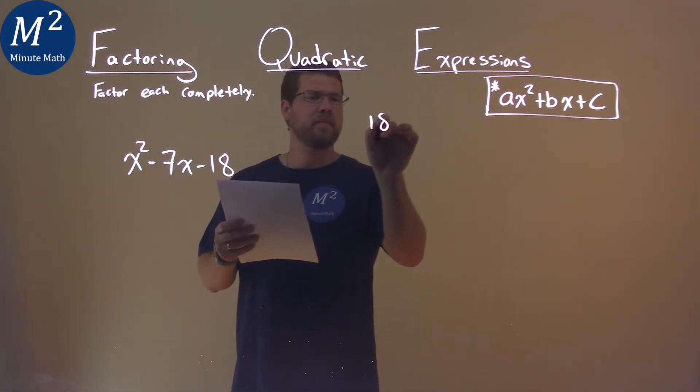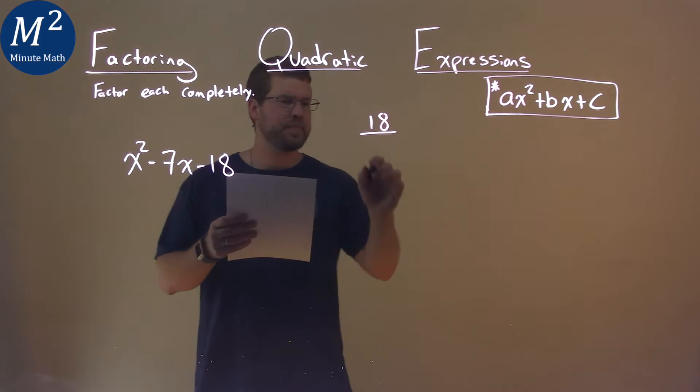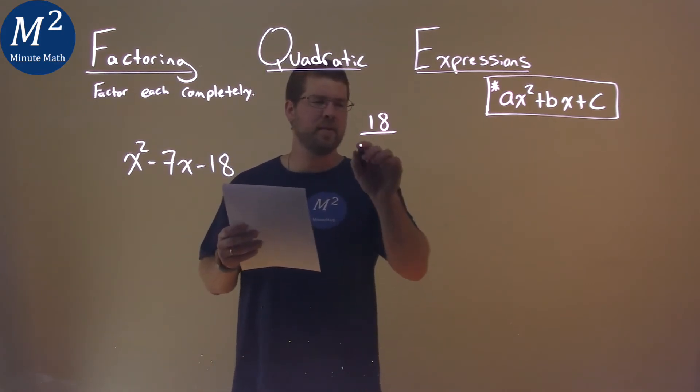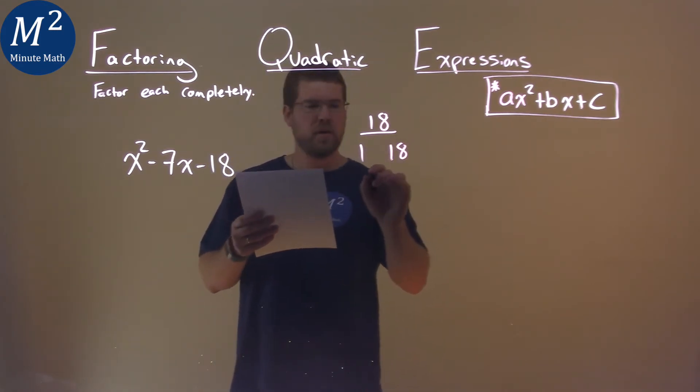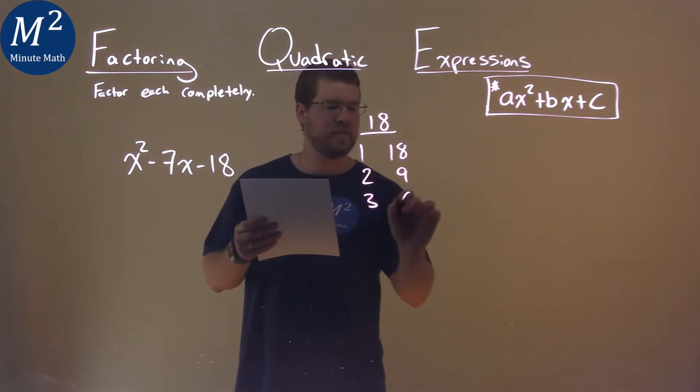So I'm going to take 18 and I'm going to find the factors of that. What two numbers multiply by 18? Well, 1 and 18, 2 and 9, and 3 and 6.